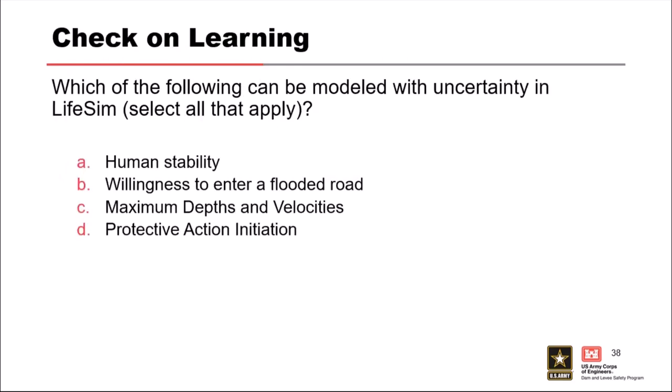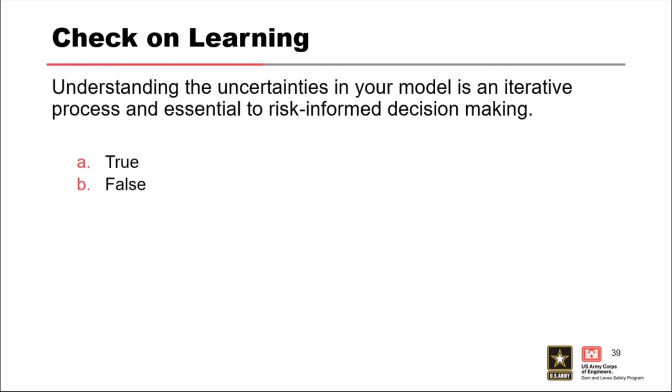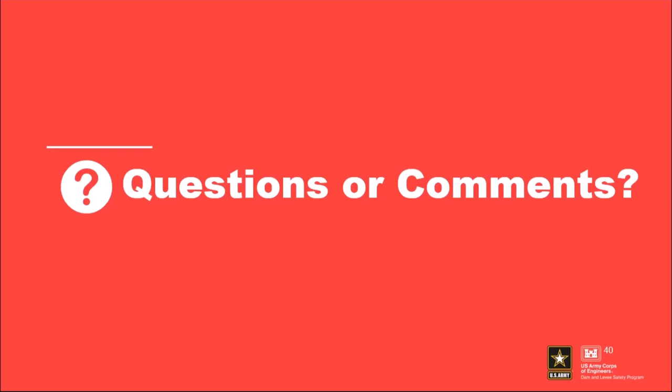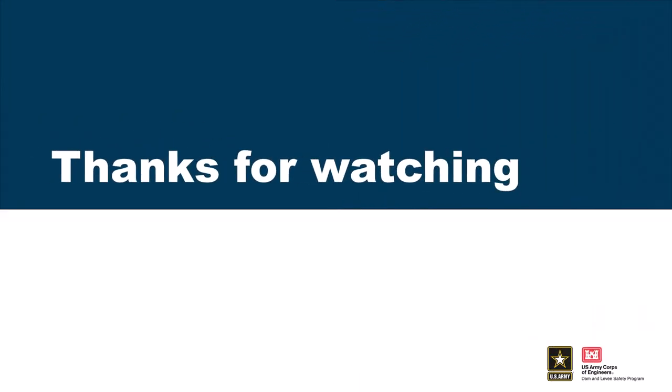Check on learning: which of the following can be modeled with uncertainty in LifeSim? Human stability — yes. PAI — yes. Max depth and velocity is the only thing not directly sampled within LifeSim; you can load different grids with uncertainty built in, but it's not explicitly brought in. Understanding uncertainty in a model is an iterative process and essential to risk-informed decision making — true.